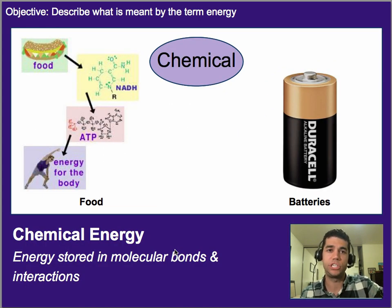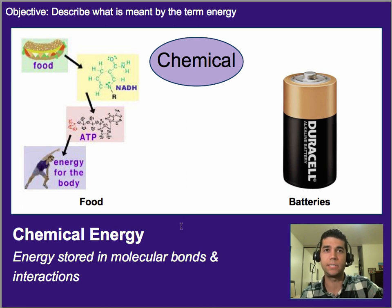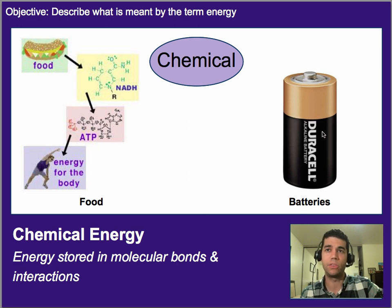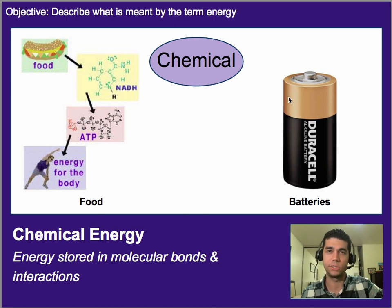Chemical energy, sometimes called chemical potential energy, is energy stored in molecular interactions. Two common types you deal with on a regular basis are food — all the energy we get to move is stored in the chemicals or molecules of food — and batteries. There are chemicals inside batteries that go through a change, and that's what gives us electricity.